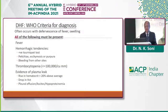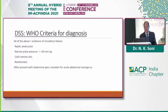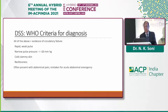The WHO criteria for diagnosis of dengue hemorrhagic fever include: fever with hemorrhagic tendencies, thrombocytopenia of less than 100,000, evidence of plasma leakage where the rise in hematocrit is more than 20%, and polyserositis where pleural effusion, ascites, or hypoproteinemia are commonly seen. Dengue shock syndrome presents with circulatory failure — rapid weak pulse, narrow pulse pressure of less than 20 mmHg, cold clammy skin, restlessness, and even abdominal pain, which can be mistaken for acute abdomen due to acalculous cholecystitis and polyserositis.